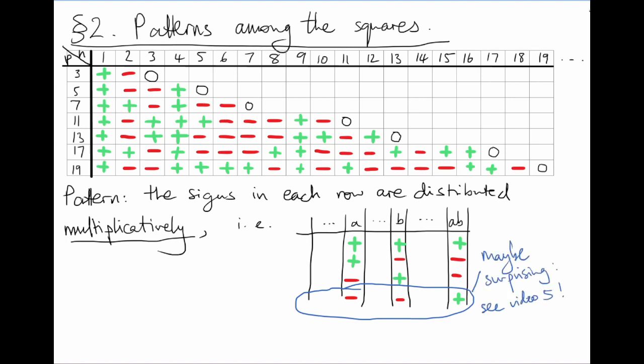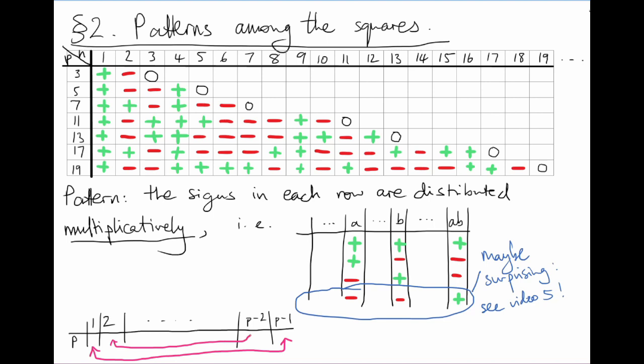You might like to have a think about why this is true — I discussed something very similar in video five. So in particular, the sign of a times the sign of b is the sign of ab. This also explains why some of the rows are symmetric and others are anti-symmetric. Multiplying by minus one is going to flip a row from left to right. So if minus one is a square mod p, then flipping a row will preserve its signs, whereas if minus one is a non-square, then flipping a row will invert all its signs.